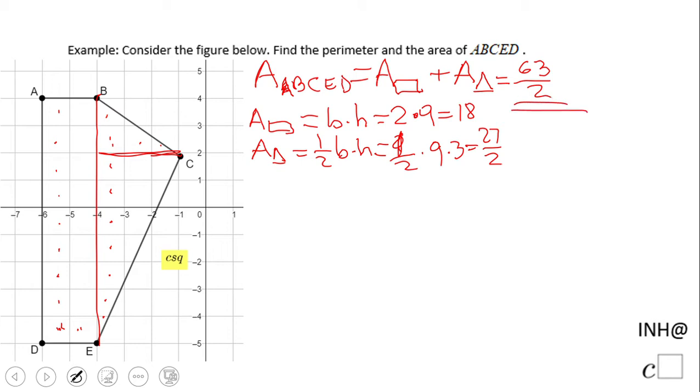What about the perimeter? For the perimeter, we want to look at the easy things first. We have three sides that are easy: this one is 2, this one is 9, and this one is 2. We need to find this guy and this guy.